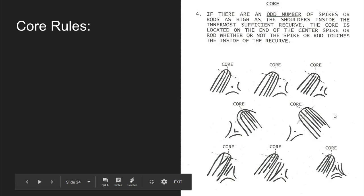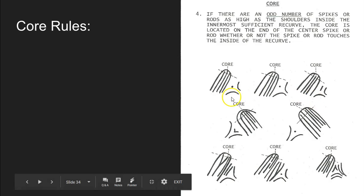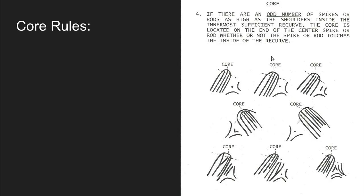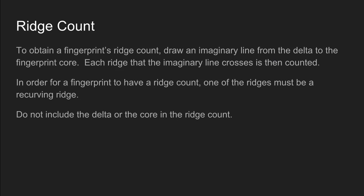What happens if we have an odd number of spikes on the inside of the innermost recurve? That's simple — we put the core on the top of the very middle spike in the middle of the sufficient recurve. Here is our type line, our type line, and our delta. We have our innermost recurve and we can see that there are three spikes in the middle of our recurve, so we put the core on the top of the very middle one. Those are the rules for placing the core in our fingerprint.